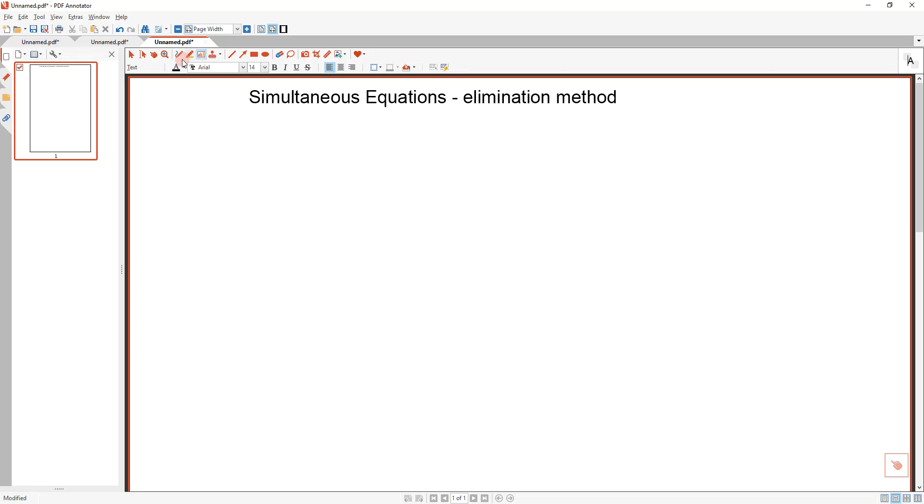Alright, so we're doing simultaneous equations. Now we have started this already when we finished up before the break. And we did a method which was called substitution. And we're now going to look at the method which is elimination.